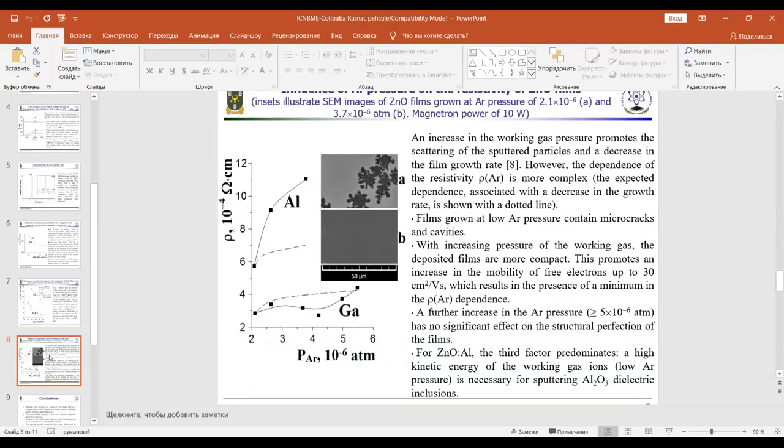An increase in the working gas pressure promotes the scattering of the sputtered particles and a decrease in the film growth rate. However, the dependence of resistivity is more complex. The expected dependence associated with a decrease in the growth rate is shown with a dotted line. Films grown at low argon pressures contain micropores and cavities. With increased pressure of the working gas, the deposited films are more compact. This promotes an increase in the mobility of free electrons.